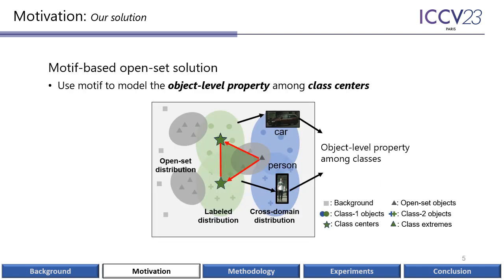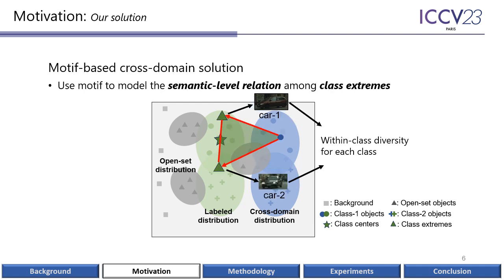Specifically, to address the open-set issue, we aim to use motif to model the object-level property among different class centers. For example, the car and the person are both foreground objects and share some object-level property, like relatively complete boundaries, which will be extracted by motif and used for open-set learning. Besides, for the cross-domain issue, we hope to use motif to model the high-order relation among class extremes, which can discover the within-class diversity for better domain transfer.